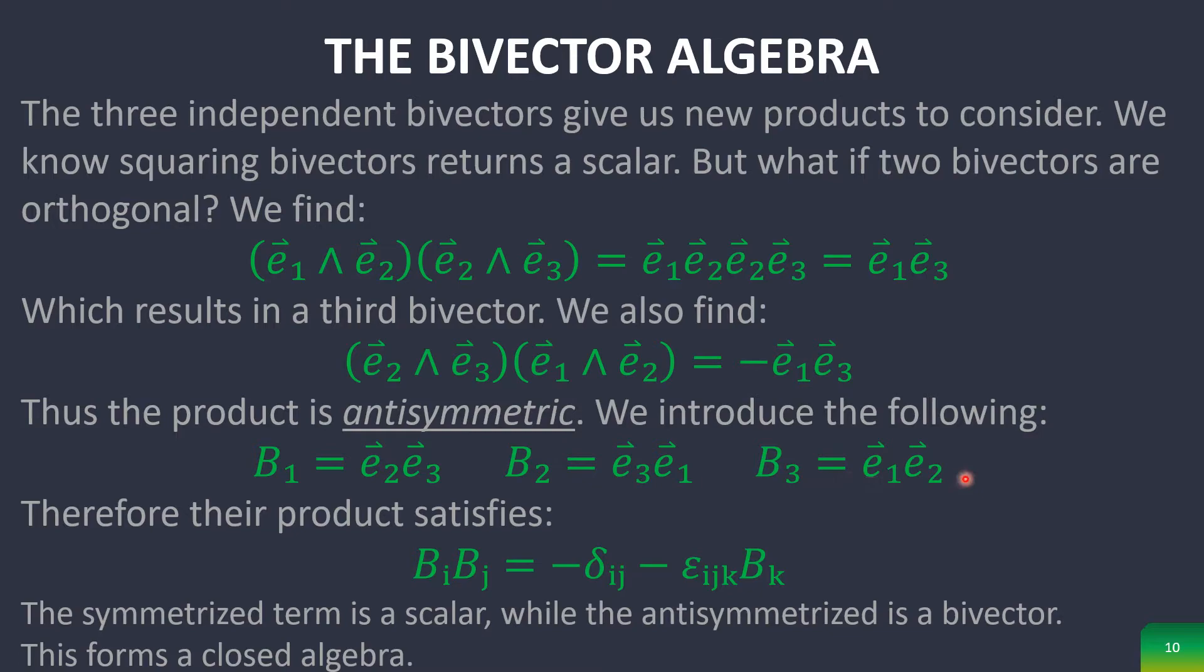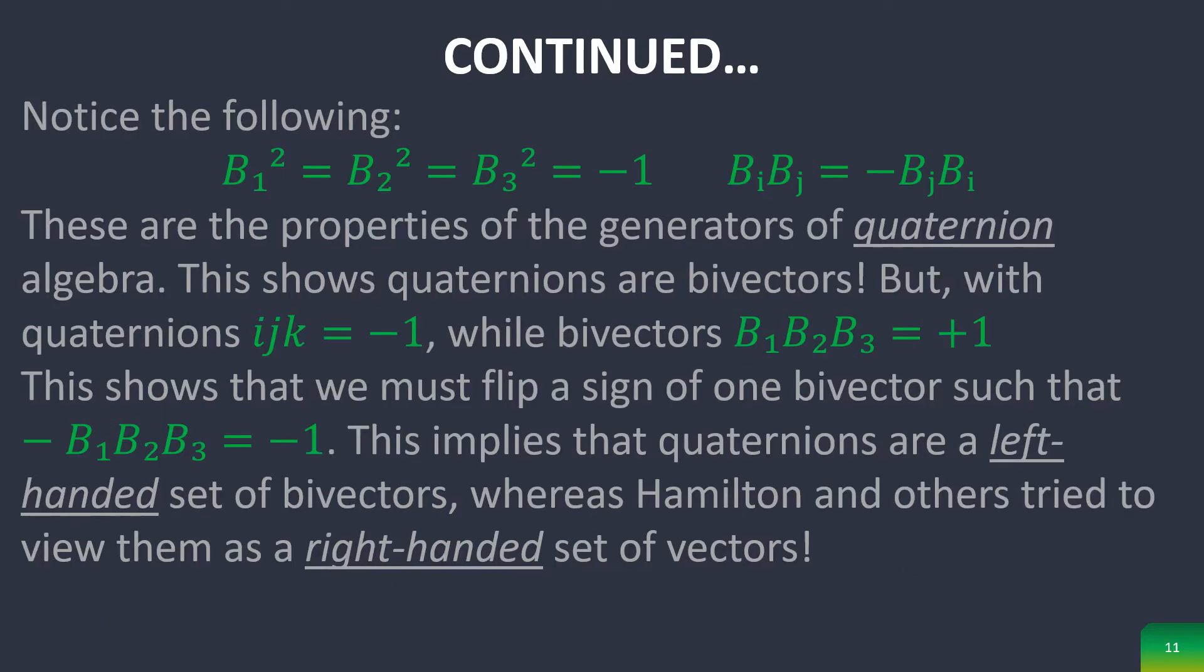2, 3, 1 is cyclic, 3, 1, 2 is cyclic. Therefore, their product satisfies the following equation. And then, if you notice the following properties, then you can easily prove that these are the generators of quaternion algebra. And so quaternions are therefore bivectors.